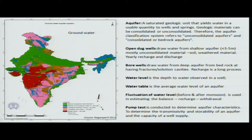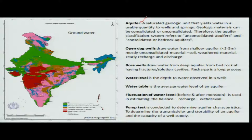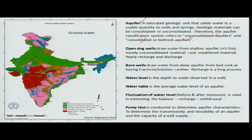Key parameters to understand about ground water include the aquifer — the geological material that can hold or retain water in significantly large volumes for extraction. There are different kinds of aquifers depending on material: unconsolidated (grain sizes not bounded together), consolidated (compacted material), or bedrock aquifers where it is only rock.